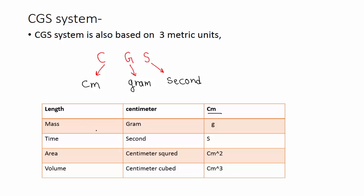Mass is measured in gram, its symbol is g. Time is measured in seconds, its symbol is s.